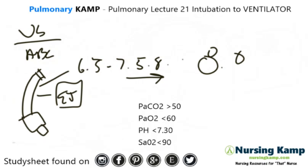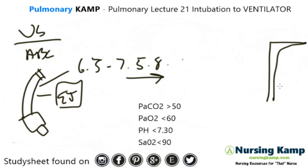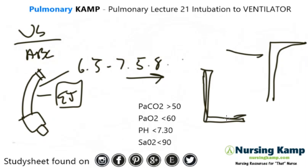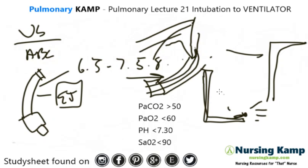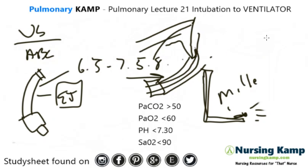You'll also get a laryngoscope. There are two types: the Miller, which looks like an L and has a light on it. When you intubate, you go into the mouth and use it to pull back the tongue to expose the vocal cords. Then there is the Mac, which is curved — kind of like a Macintosh Apple. These are usually preference; you don't need to use one or the other specifically.